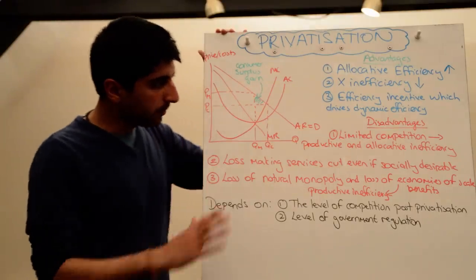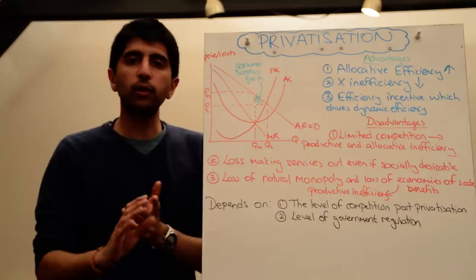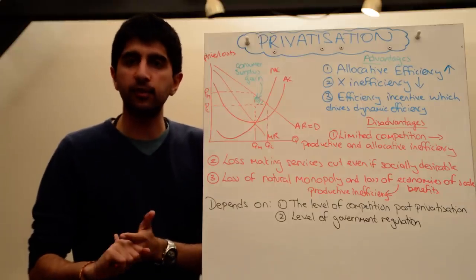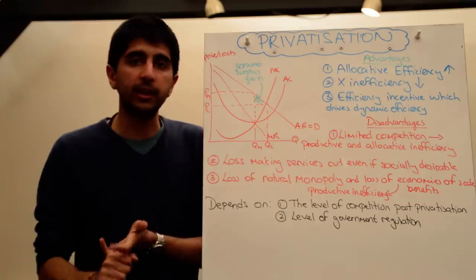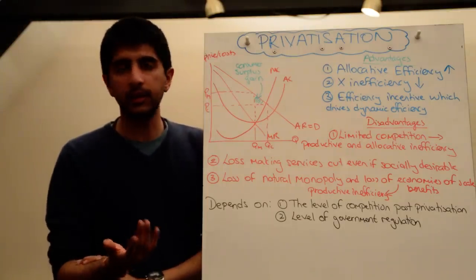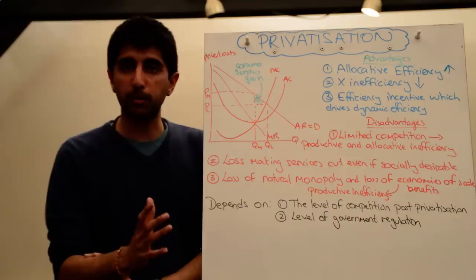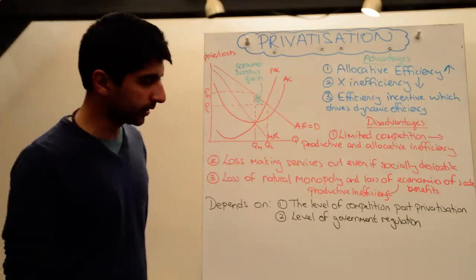At the same time, with privatisation, because of this profit motive, firms that operate are not going to want to run loss-making services. They are not going to want to provide loss-making goods, even though they might be socially desirable goods and services. If they don't make a profit, firms are not going to provide them. And that is a big problem because consumers want them.